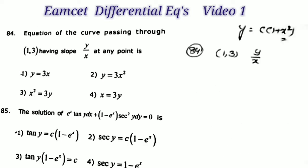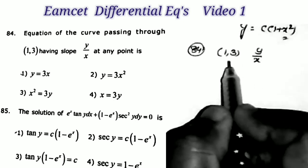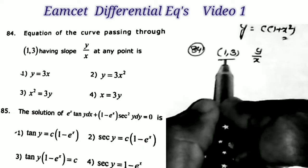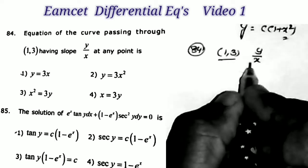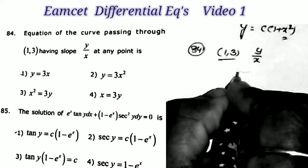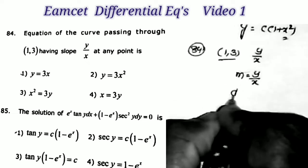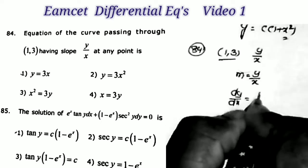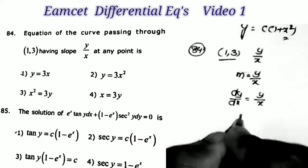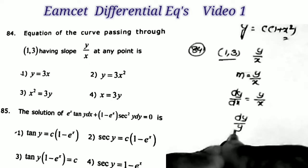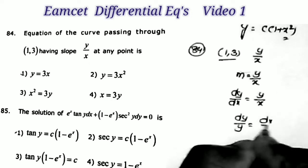Next question, sum number 84: the equation of the curve passing through the point (1, 3) having slope y/x at any point. The slope formula is dy/dx, so dy/dx = y/x. Now separating the variables: dy/y = dx/x.